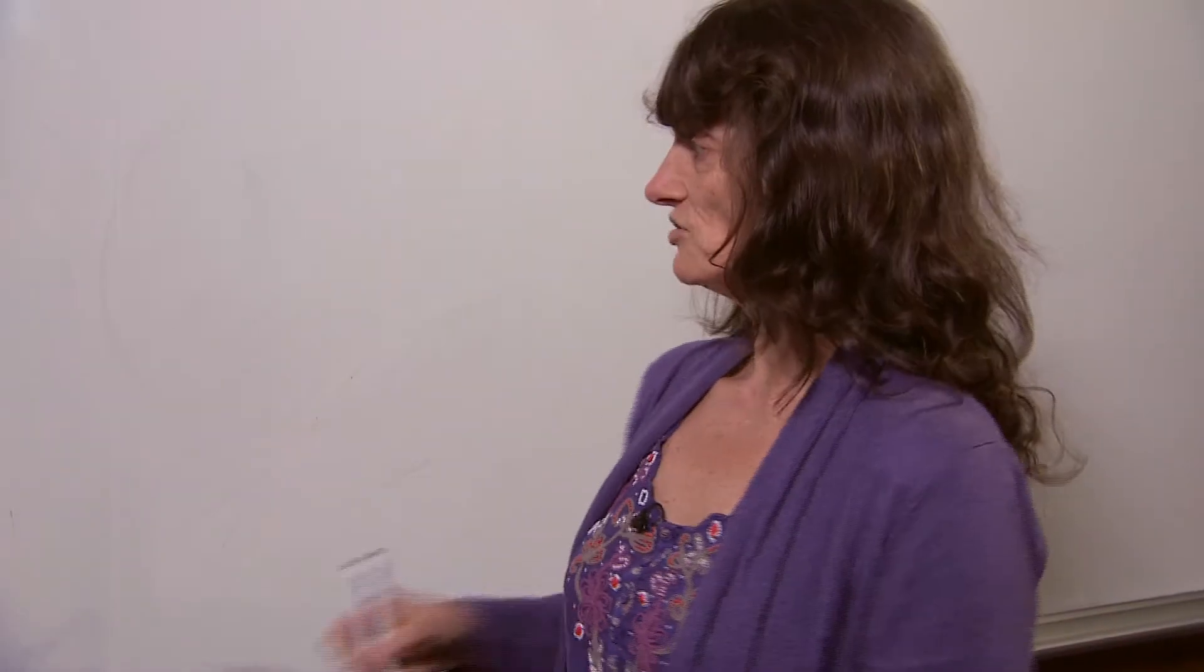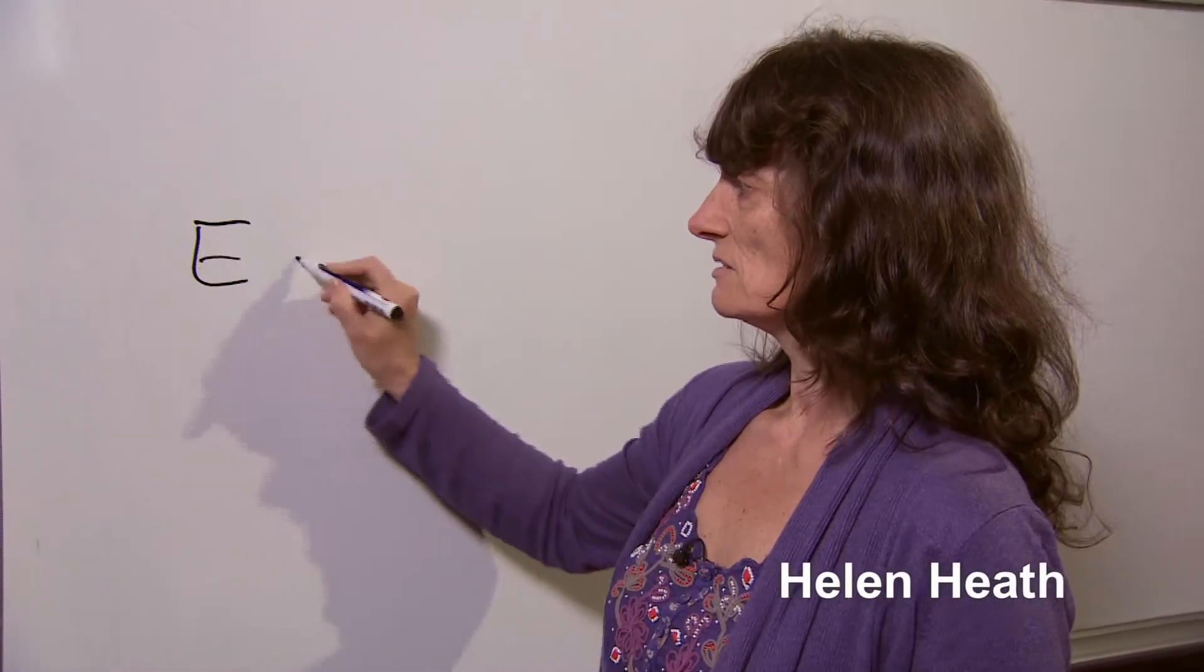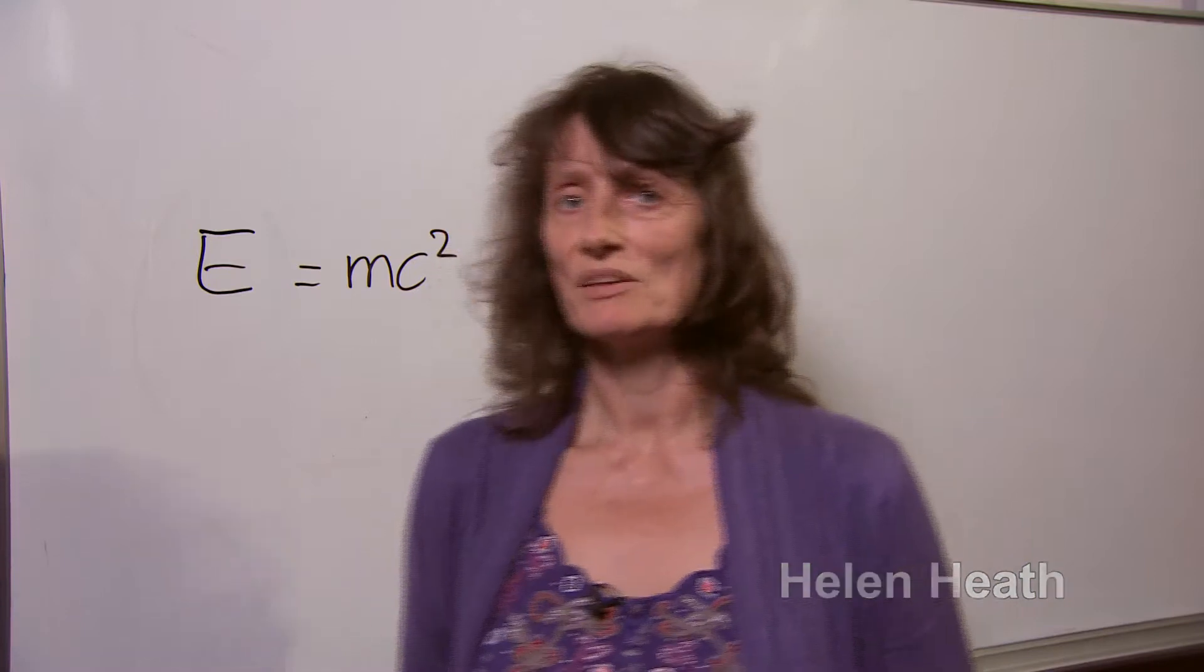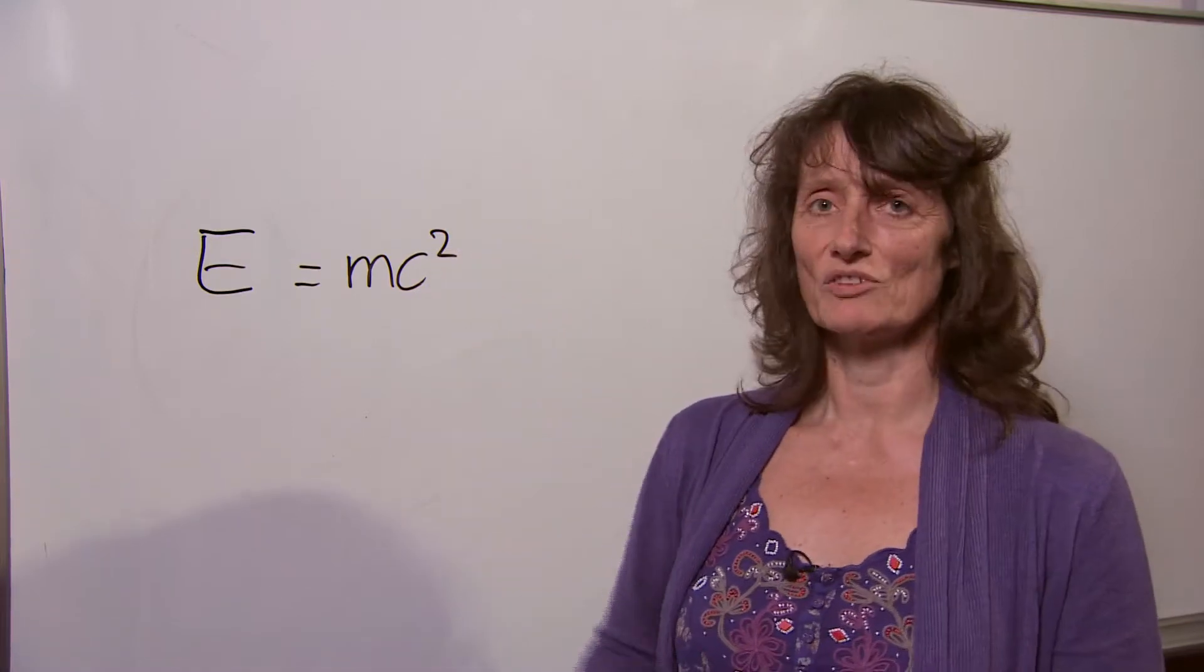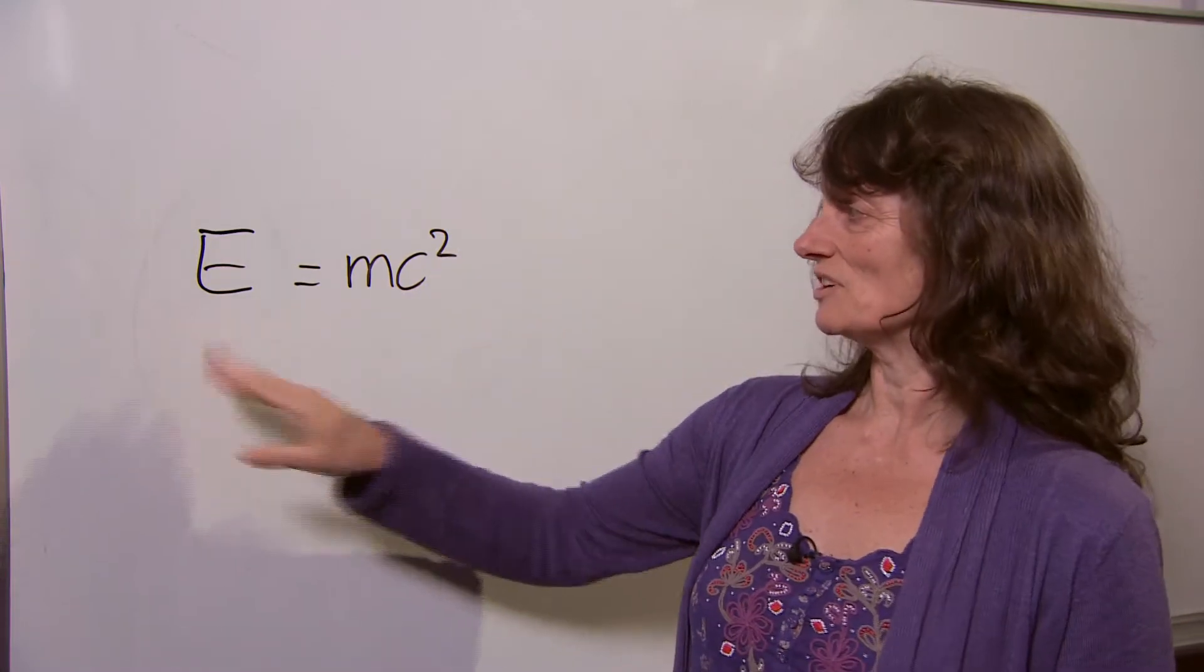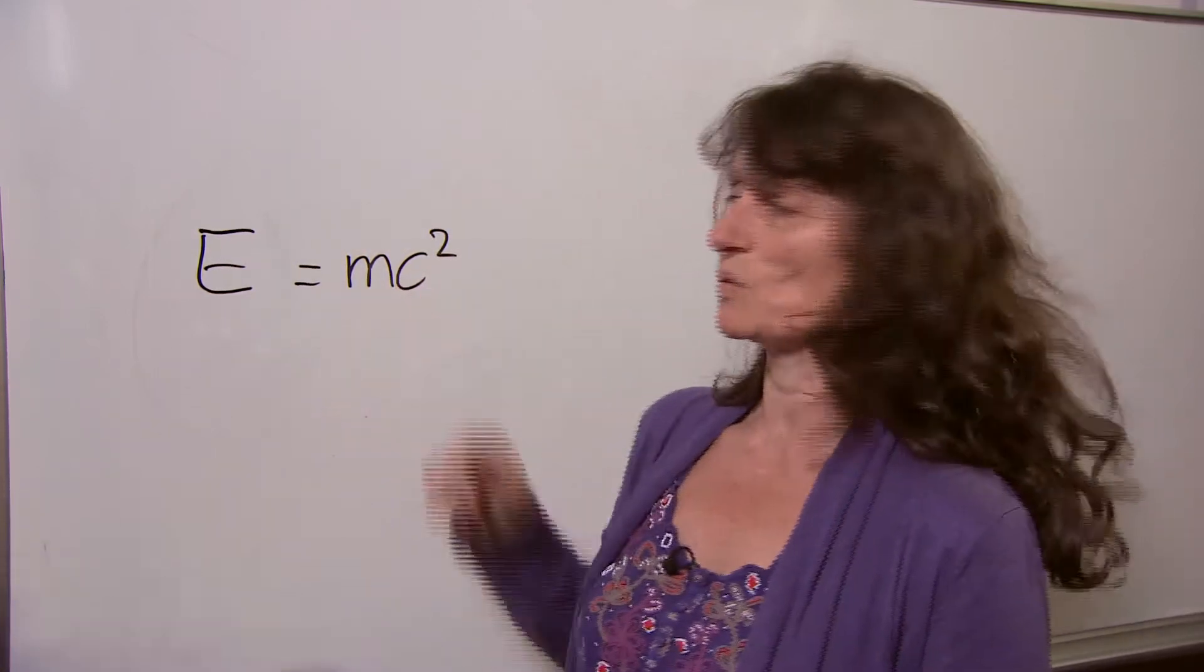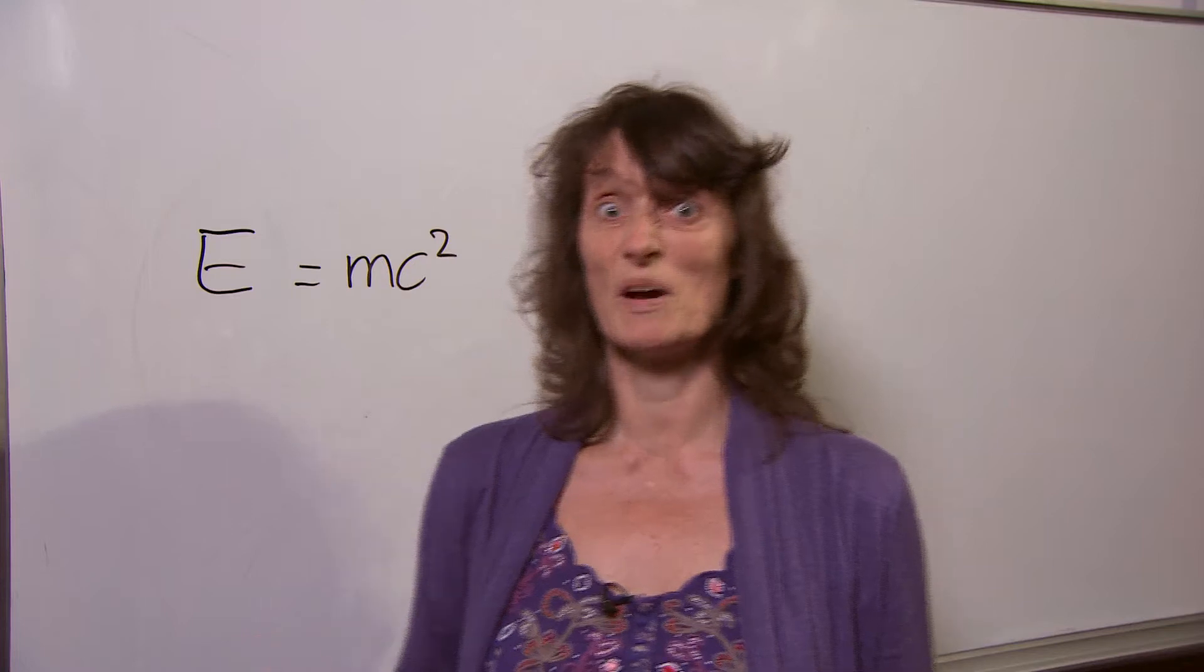Einstein said that you can take energy and produce particles with mass with what's probably the most famous science equation of all. You take energy, convert it with this conversion factor, c squared, which is the square of the speed of light, which is quite a large number.